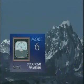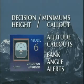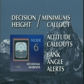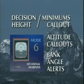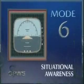Mode 6 contains altitude and bank angle call-out functions designed to increase situational awareness for the flight crew. These call-outs are selected by the customer when GPWS is initially installed in the aircraft.